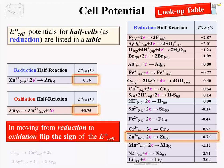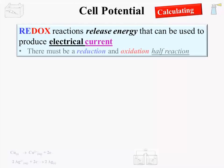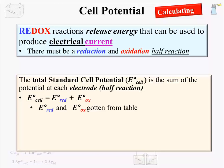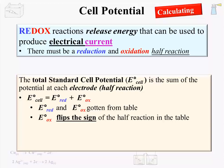A redox reaction has two half-reactions and a galvanic cell has two half-cells. In considering the entire potential, the total standard cell potential is the sum of the potential at each electrode — that is, for both half-reactions. Mathematically, EO cell equals EO reduction plus EO oxidation. These potentials are obtained from a table, and when dealing with the EO oxidation part, we will need to flip the sign of the half-reaction as listed in the table.